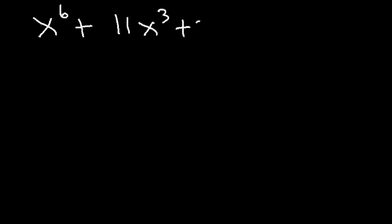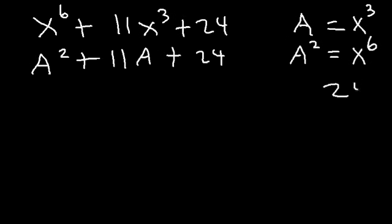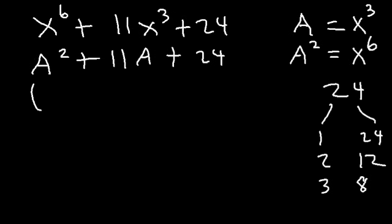Try this one: x to the sixth power plus 11x cubed plus 24. This time we're going to set a equal to x cubed, and therefore a squared is x to the sixth power. So this becomes a squared plus 11a plus 24. What two numbers multiply to 24 but add to 11? 3 times 8 is 24 and 3 plus 8 adds up to 11. So we can write this as a plus 3 times a plus 8.